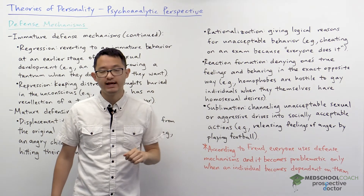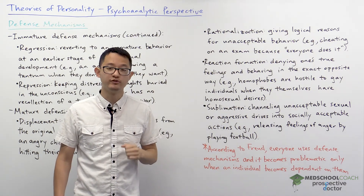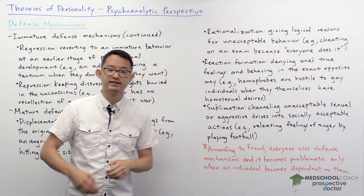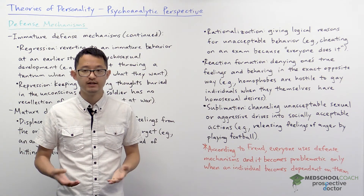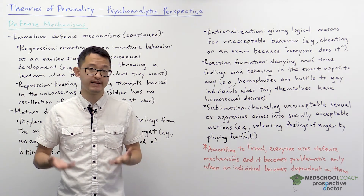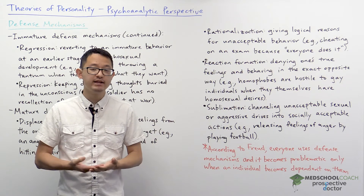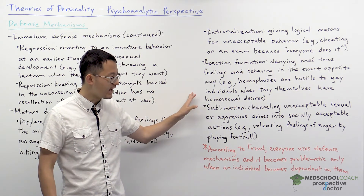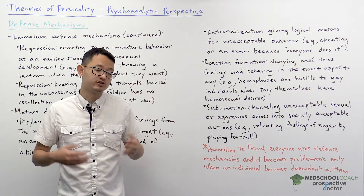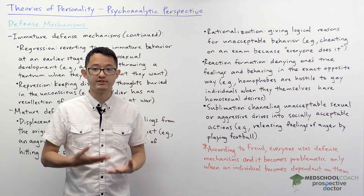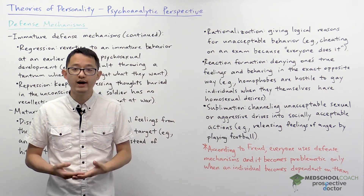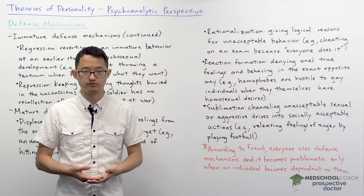We also have reaction formation. This is denying one's true feelings and behaving in the exact opposite way. This has been demonstrated with homophobes. Homophobes often mistreat gay individuals, and it's actually been found that many of these homophobes actually have homosexual desires. So essentially they're denying their true feelings, denying their homosexual desires, and instead acting in the opposite way and mistreating gay individuals.